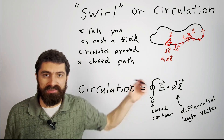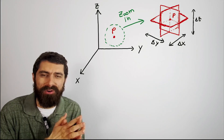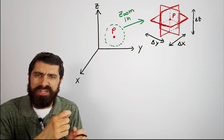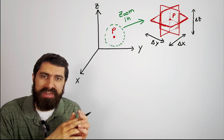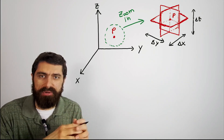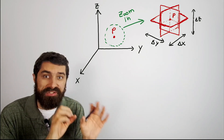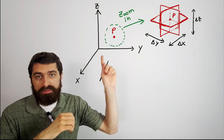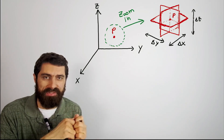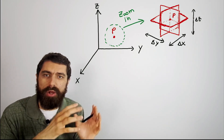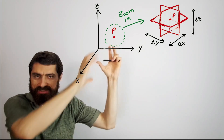Curl is basically circulation at a point. If you remember when we talked about divergence, we were talking about flux going out of a small volume — well, we're going to do something very similar with curl. Let's say you have an xyz coordinate system and you pick a point P, a random point, and we want to know what is the curl at that point.